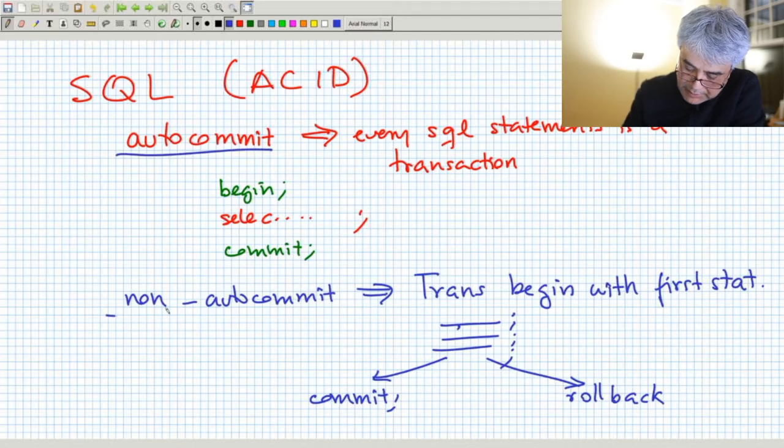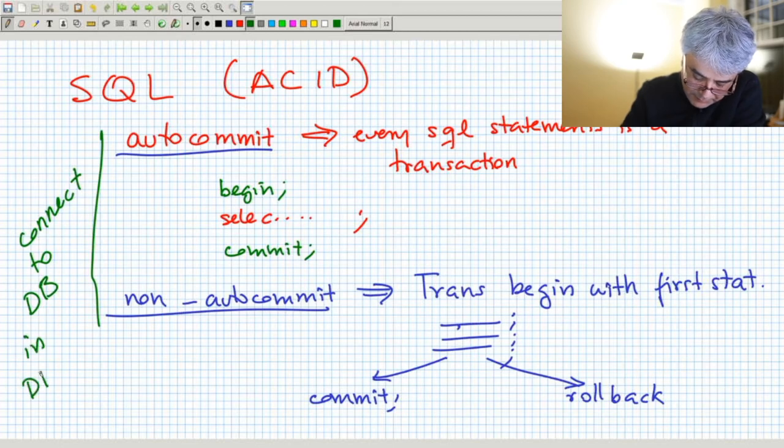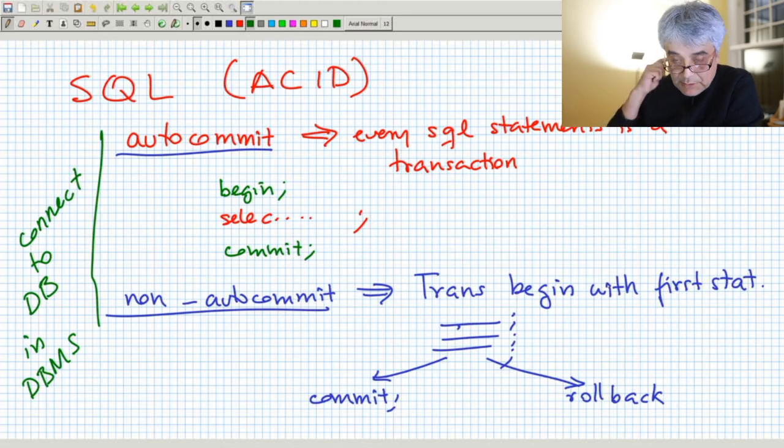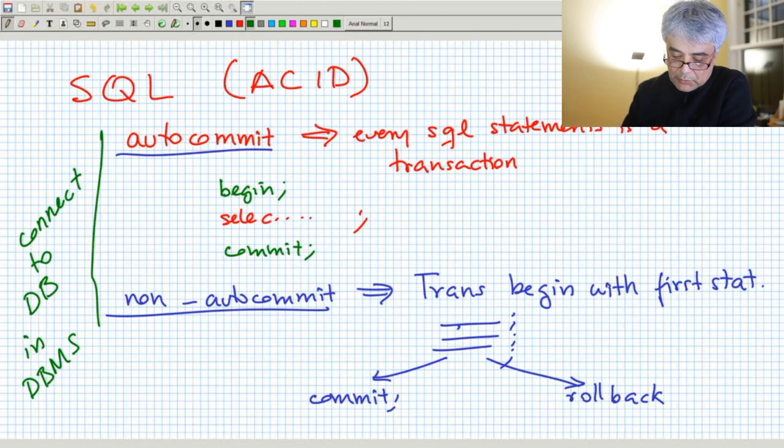How do you determine that you have autocommit or non-autocommit? This is when you connect to the database in the DBMS. Remember the program that you wrote for the assignment? So in that program, in the connect, you specify a bunch of information like the username, the name of the database. In there, if your library supports it, you can actually say I want autocommit or I want to issue my transactions and manually do the commit or the rollback. So that's at the moment that you connect, whether you are in one or the other.